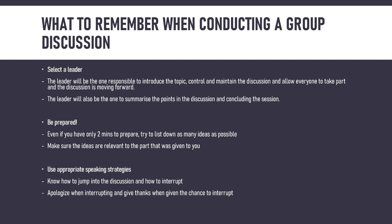Third, use appropriate speaking strategies — know how to jump into the discussion and how to interrupt. You can join the discussion by agreeing with someone and providing your reason why. You can interrupt someone while they are giving their ideas, but you need to do it properly. If you want to agree, wait until the person has finished talking, then jump in: 'I agree with candidate so-and-so, and here is why.' When you want to interrupt, ask for permission politely — you cannot just jump in. Apologize for the interruption and thank the person for giving you the chance to speak.